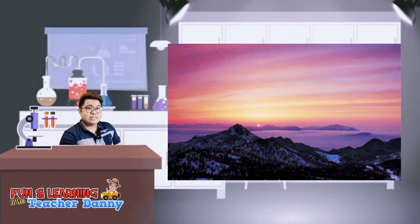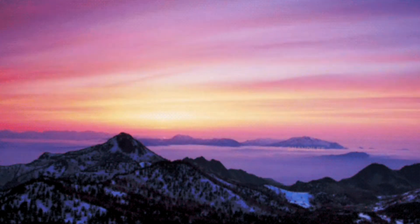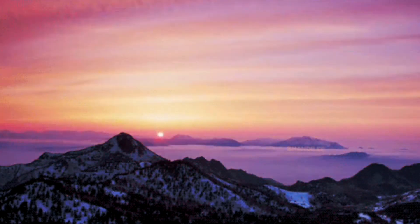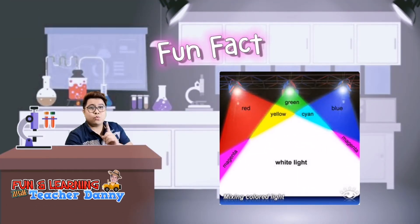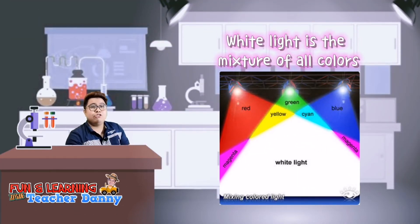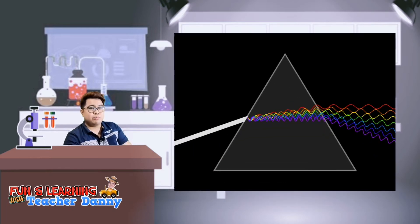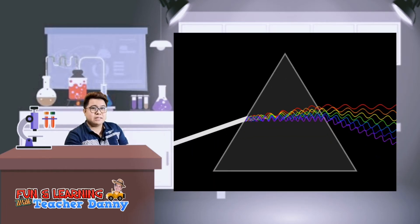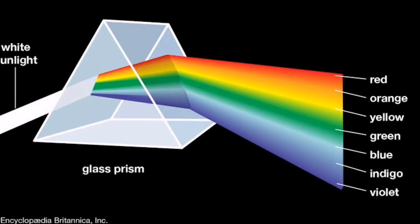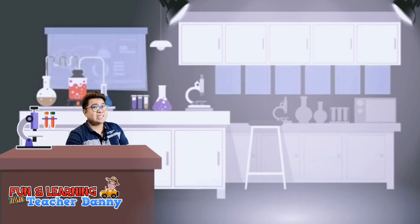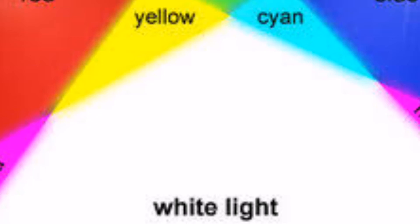During sunset, the sky appears red because more light is being scattered. Here's a fun fact — did you know that white light is the unison of all colors? When you beam this light through a prism, it will be refracted into the colors of the rainbow: red, orange, yellow, blue, indigo, and violet. So again, if we mix all the colors, we will have white light.